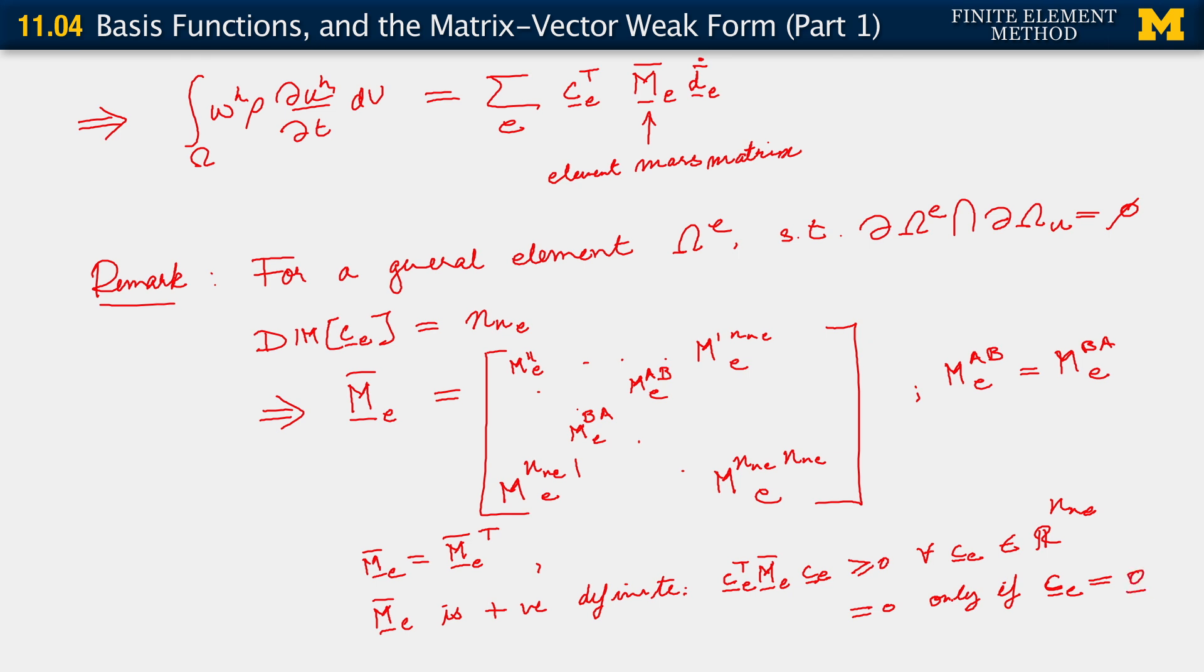And in fact, it's equal to 0 only if the c_e vector itself is equal to 0. Okay? This is what we mean by positive definite matrix. And indeed, M bar e is positive definite. Okay? All right.